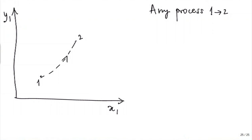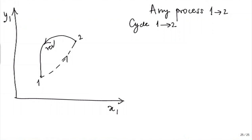What we do is we link state 2 back to state 1 by some reversible process. So let 2 to 1 with REV as a subscript be a reversible process. Consider this cycle 1 to 1, which is formed by the process 1 to 2 as specified, followed by 2 to 1 through our selected reversible process.